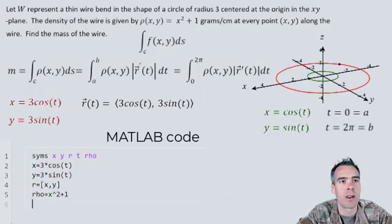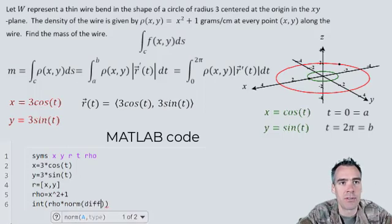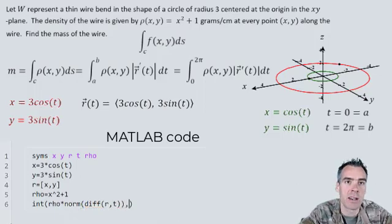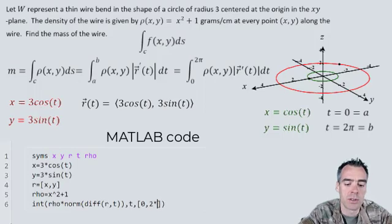With that, we're ready to throw all this into an integral. We've got the integral of our ρ times the magnitude of the derivative of our position vector function, differentiated with respect to t, integrated with respect to t, going from 0 to 2π.